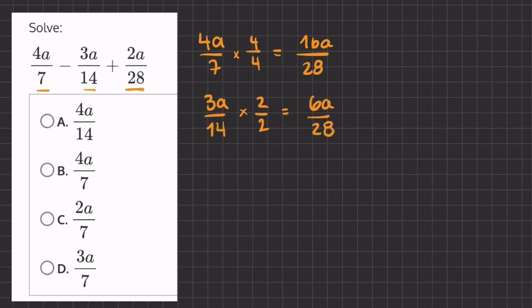Now all of our fractions are in the least common denominator form, so now we can add and subtract all of them. So we have 16a over 28 minus 6a over 28 plus 2a over 28.